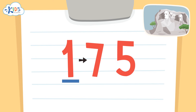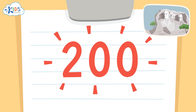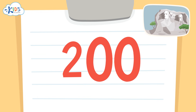I see a seven in the tens place. I know if it's five or higher, we have to round up. The one in the hundreds place is underlined, so we'll have to round the 100 up to 200. When rounding to the hundreds place, the numbers in the tens and ones places become zeros.